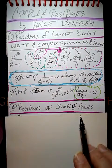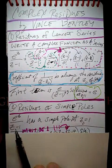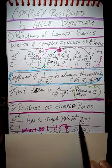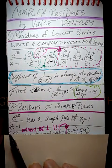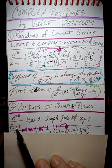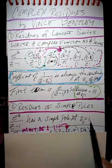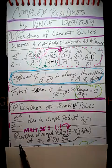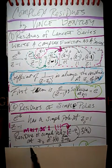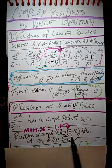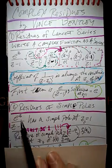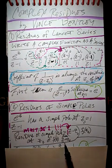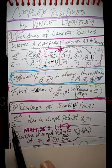Let's take a look at residues of simple poles. We're going to do this function again, but in a different way. e to the z over z minus one has a simple pole at z-naught equals one, because one causes a problem — it's discontinuous in this thing. So the simple pole is at z-naught equal to one. If you want to know the residue of a simple pole at z-naught of f of z, multiply the function by z minus z-naught, and then after you multiply it, take the limit as z goes to z-naught.